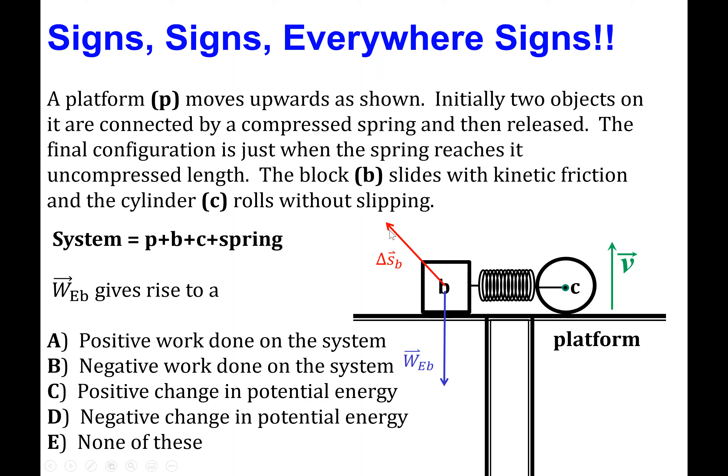So, then we conclude that the work done by the force of gravity on block B must be negative work done on the system. So, B is the correct answer.